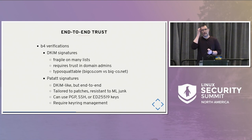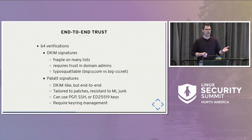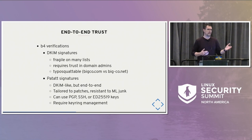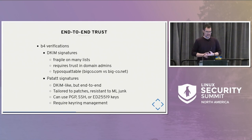Or it's a sub-maintainer you trust normally, and you'd say 'I'll take these patches,' but it may actually be somebody else posing as that sub-maintainer. You can look at B4, for example — it will check DKIM signatures, but that doesn't mean as much as people think. End-to-end trust: how do you know that the patches you've received are from the same person who has previously submitted patches to you, with whom you've had a relationship for years and you trust?